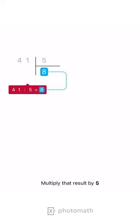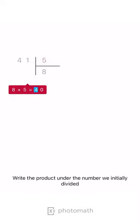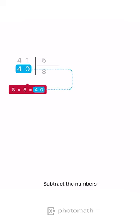Multiply that result by 5. Write the product under the number we initially divided. Subtract the numbers.